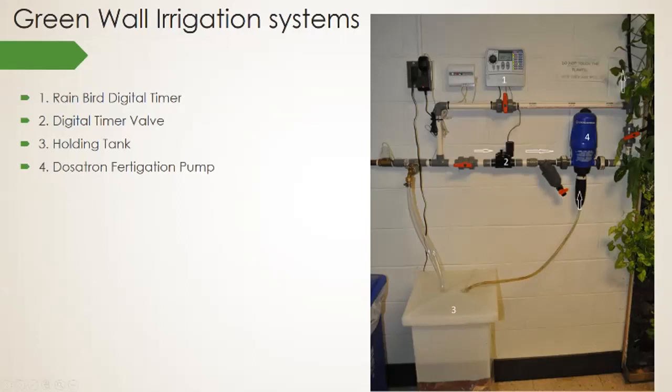It's a pretty complicated system and things constantly need to be tweaked and adjusted. A big problem is losing power during a storm — there have been a few times I've had to manually water the wall with a spray bottle in emergencies like that. But when it all works together, it is very nice. We installed this now eight years ago and it's still working, which is pretty impressive.